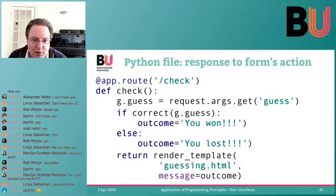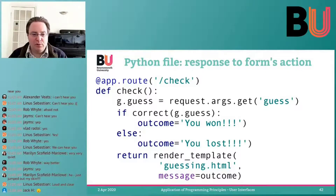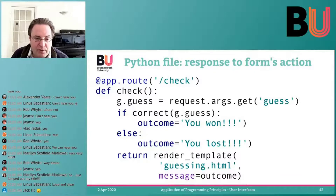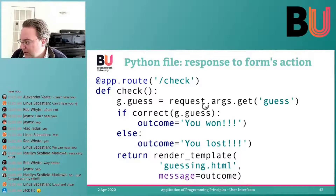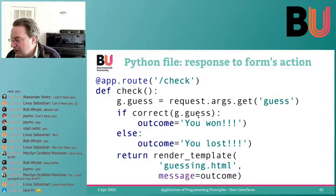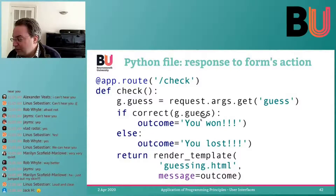In Python and Flask, we want the ability to actually get our data. We check our program and see that we have the request object available, where we can get the arguments of the request and then get a specific property. If you post something, it will be available as those arguments. You can then use that to set the guess from the argument, check whether it's correct, and set the outcome.